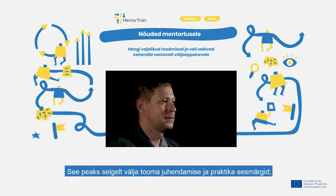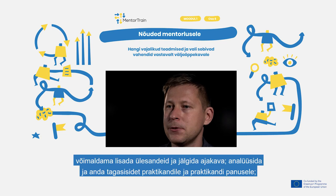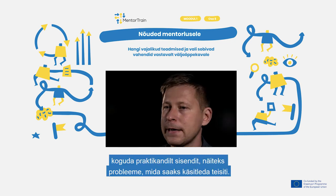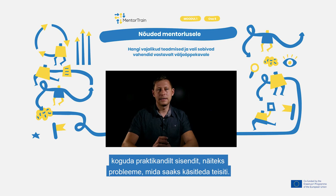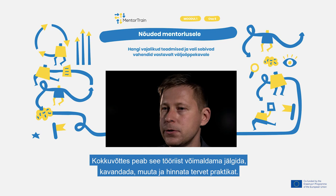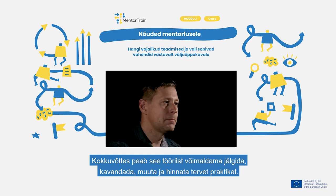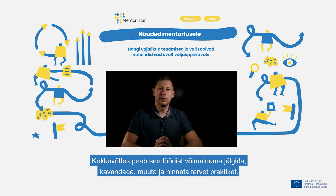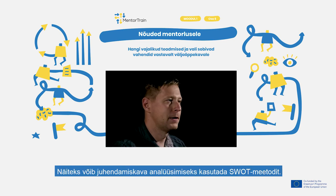What possibilities must a good tool for mentoring have? It should make clearly visible the objectives of the mentoring and the apprenticeship, with the possibility to add tasks and to follow a time schedule. It should allow you to analyze and give feedback to the apprentice and their contributions, and to collect input from the apprentice — for example, problems that could be handled differently. In conclusion, with the tool you must be able to follow, plan, change, and evaluate the role of the apprenticeship.